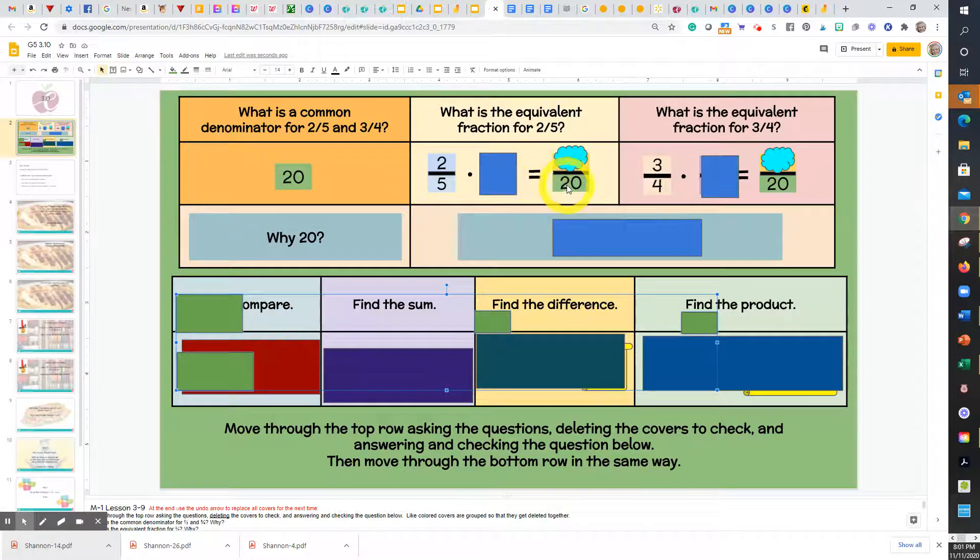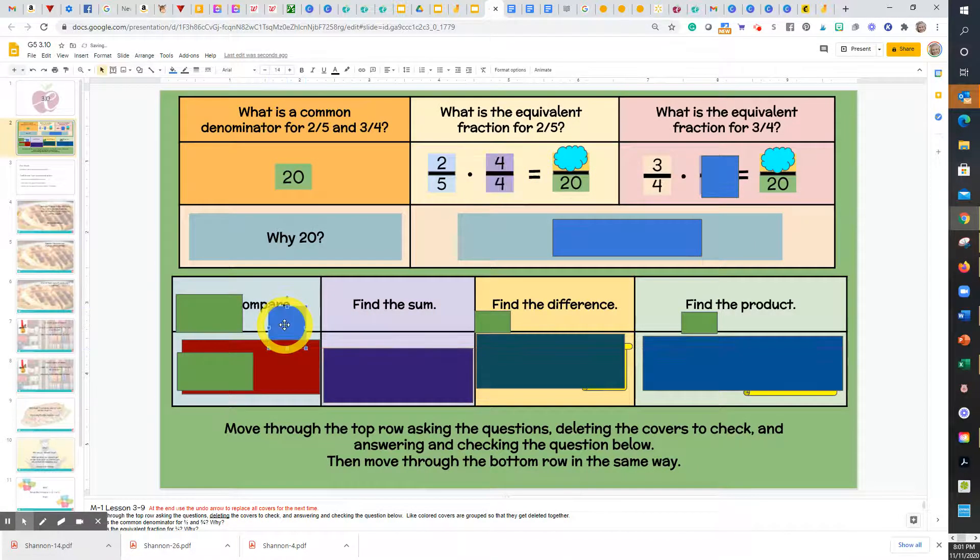If our common denominator is 20, what would I have to multiply two-fifths by in order to get a denominator of 20? Think about it. Class, four-fourths.